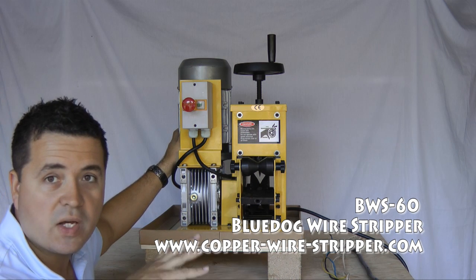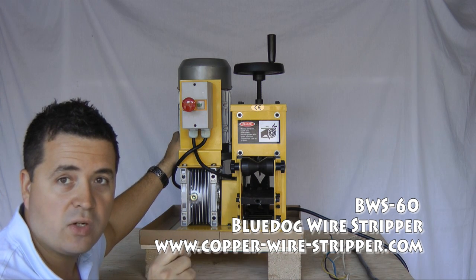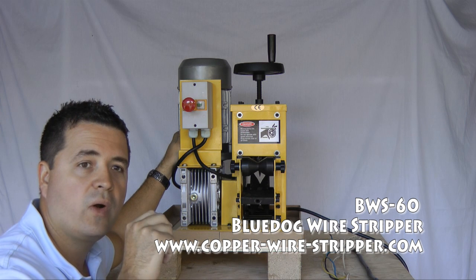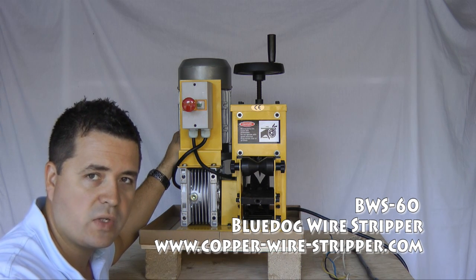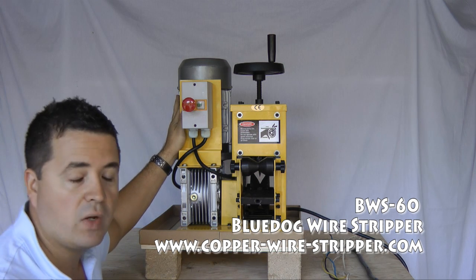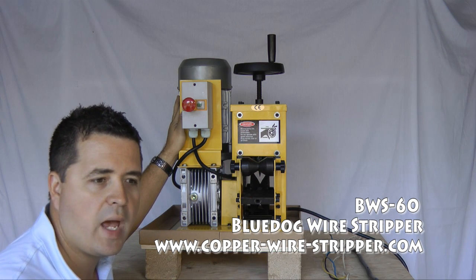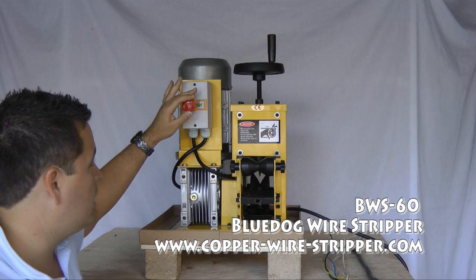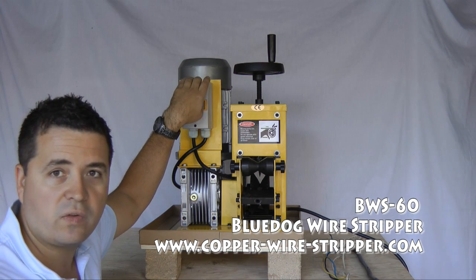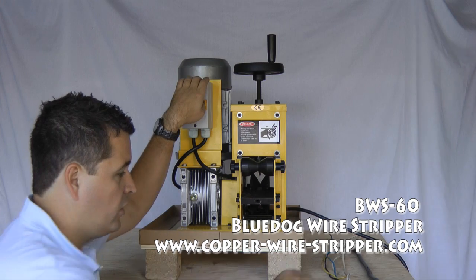Again, the BWS-60, and just to let you know the 60 stands for 60 millimeters and that's the maximum wire thickness you can run through this machine. That also works out to 2 and 3 eighths inch wire. Now, let me show you how this machine works.